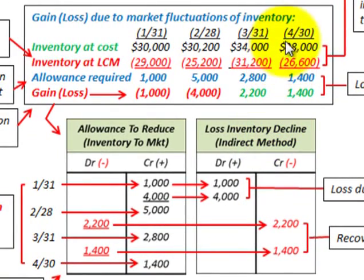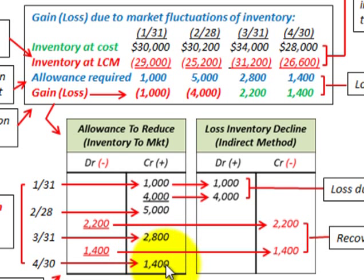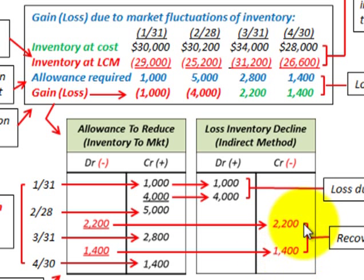For April 30th, cost is $28,000 and inventory LCM is $26,600, so the allowance required is $1,400. The allowance account has $2,800; we need to get down to $1,400. We debit or reduce the allowance account by $1,400 and credit the loss on inventory decline by $1,400 — again recovering previously recognized losses. Next, we'll look at how to record this on a financial statement, recognizing the allowances and losses.